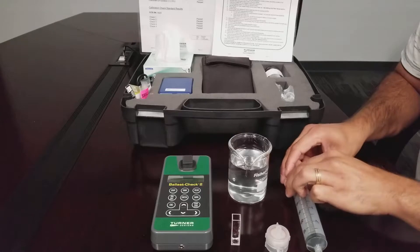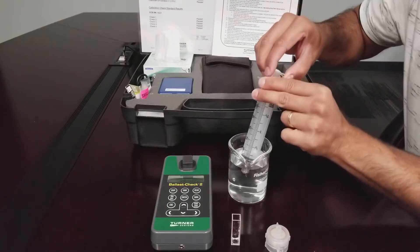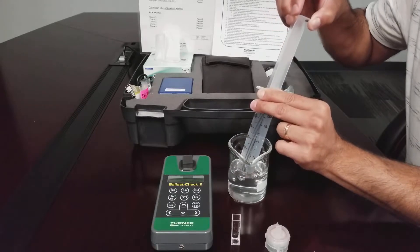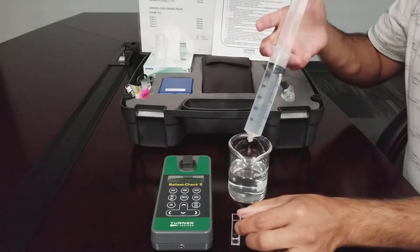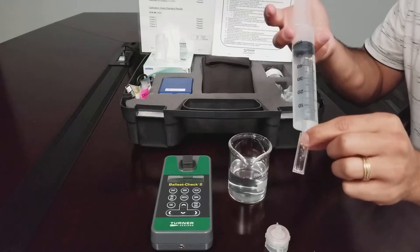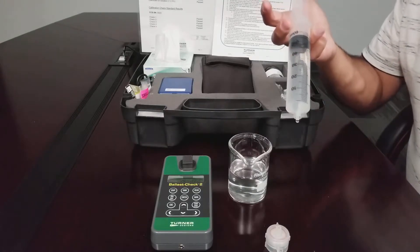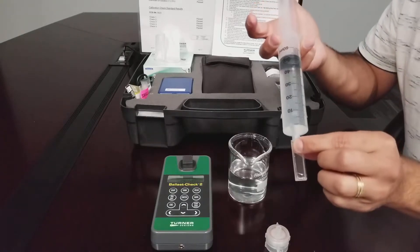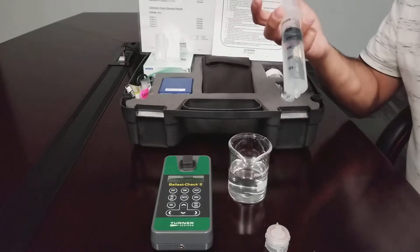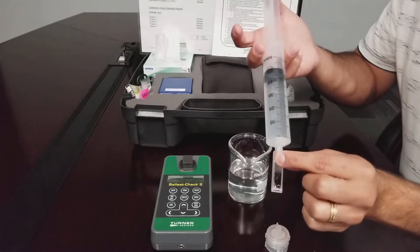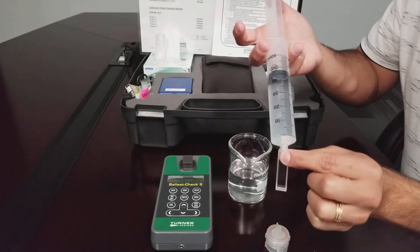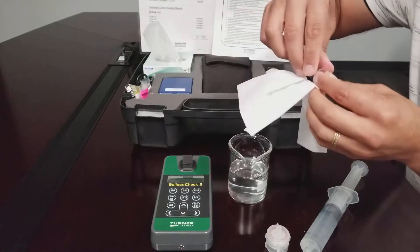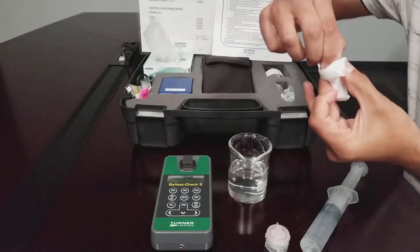Use the syringe to sample 60 cc of ballast water. Rinse the glass cuvette 3 times using your sample and fill the cuvette 3 quarters full. Use a kim wipe to wipe the sides of the cuvette to wipe away any moisture and fingerprints.